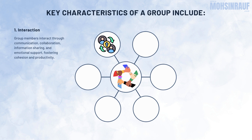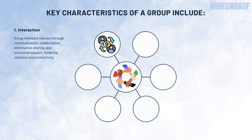1. Interaction. Members of a group engage in communication and social interaction with one another. This interaction can take various forms, including verbal communication, collaboration on tasks, sharing of information, and emotional support.